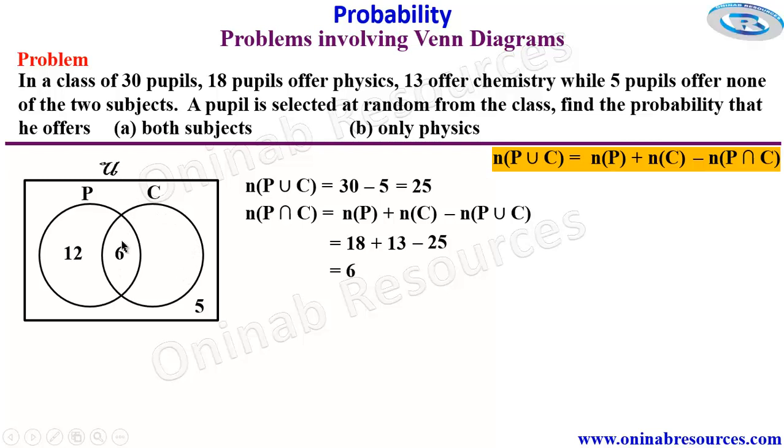In the same way, this circle is 13. So to get those offering chemistry, but not physics is going to be 13 minus 6, which gives 7.